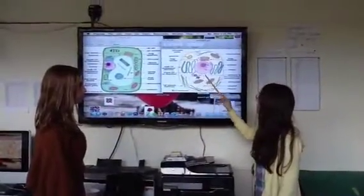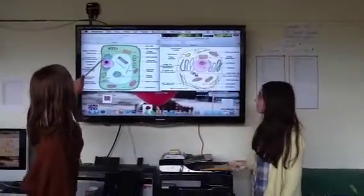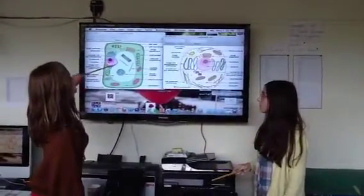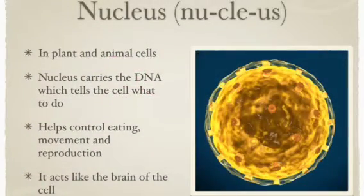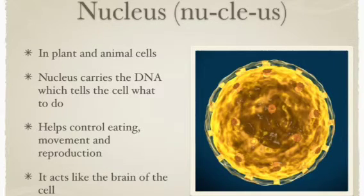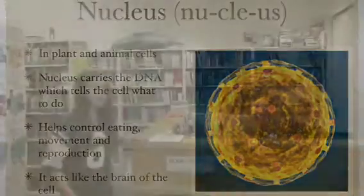This is where the nucleus is in an animal cell, and this is where the nucleus is in the plant cell. The nucleus is found in both plant and animal cells. It carries the DNA, which tells the cell what to do. It helps control eating, movement, and reproduction — it acts as the brain of the cell. If this room were a plant or an animal cell, the librarian would be like the nucleus of the room because of the librarian's brain.